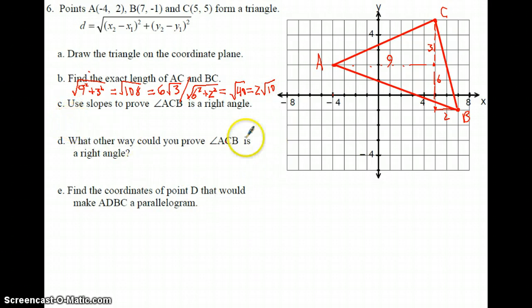Use slopes to prove that this is a right angle. Using slopes. The slope here is rise over run. Now it's really nice to have this 3 and this 9 in here. Because now I can go, oh yeah, the slope is 3 ninths or 1 third. And the slope here, it's rise over run. It's negative 6 over 2, which is negative 3. And I know that the positive 1 third times negative 3 equals negative 1. And so yes, it's perpendicular.